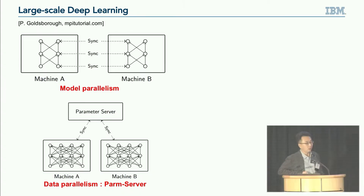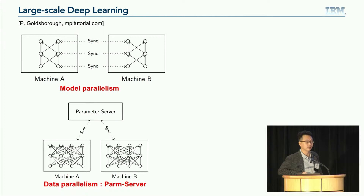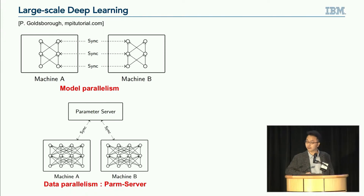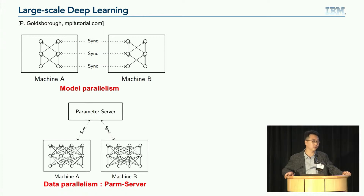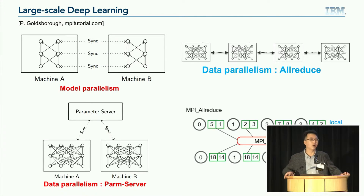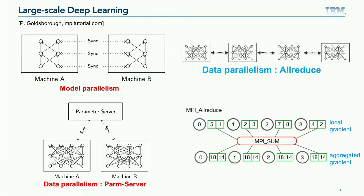For large-scale distributed learning, there are a few approaches. The first is model-level parallelism, where we partition the model and each piece goes to different devices. Or we can use large batch sizes to enable data-level parallelism. One approach is a parameter server, as in previous talks. But these days we are more interested in data parallelism based on all-reduce technology. All-reduce is not new — it's a concept that has been in the HPC community for two decades.